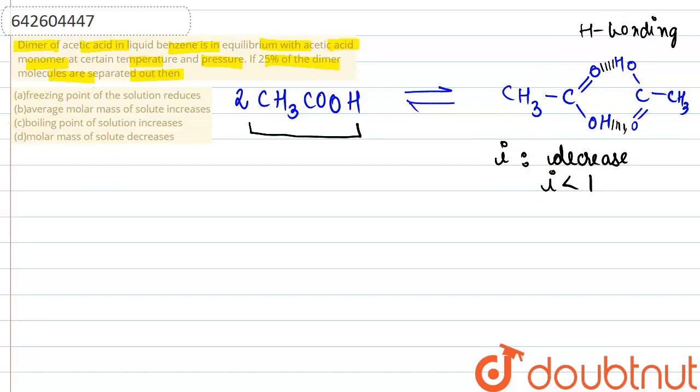Now the question is saying that 25 percent of dimer molecules are separated out. So let's pen it down: 25 percent of dimer molecules are taken out. So what will be the result of this?